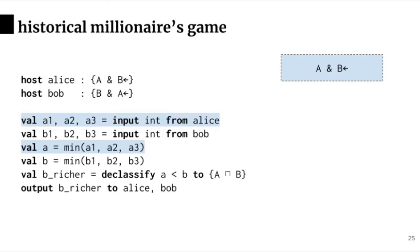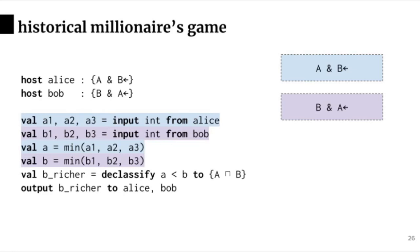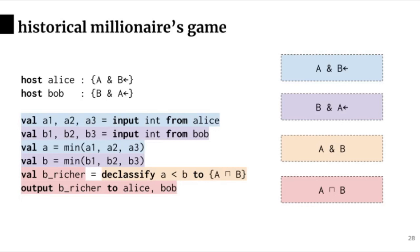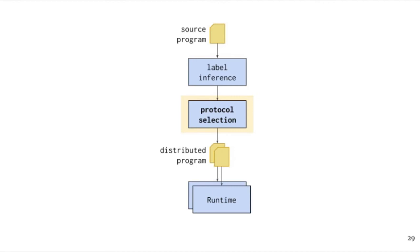Here is the result of label inference for the historical millionaire's game. Receiving input from Alice and computing her minimum net worth requires label A and B integrity, meaning that the implementation must be trusted enough to read Alice's private data and both Alice and Bob must trust that its execution was performed without cheating. There is a similar case for Bob: the implementation of those components has label B and A integrity. Comparing Alice and Bob's minimum net worths requires label A and B, meaning its implementation must be trusted to read both Alice and Bob's private data and both must trust its execution was correct. Finally, the declassified result of the comparison and outputting it to the participants requires label A and B, meaning its implementation only needs to read data visible to both Alice and Bob.